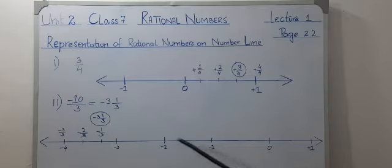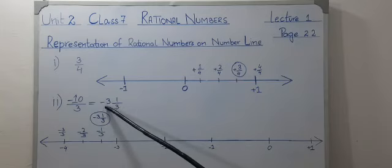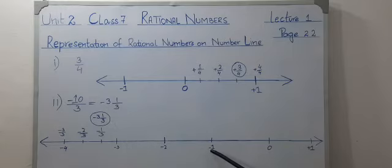0, minus 1. Our purpose is minus 3 whole number. Right? So, first of all, we move to minus 1, minus 2, minus 3 here. We have to stop.